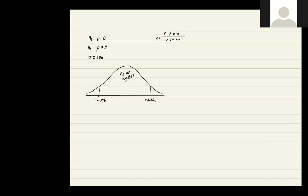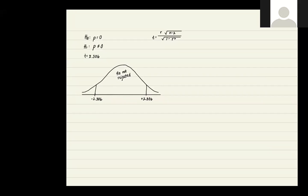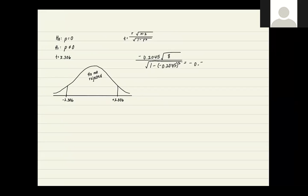So now if we go over here, we can figure out whether or not to reject or fail to reject our null hypothesis. So our R value we already calculated is negative 0.2045. In the square root, it's going to be 8 divided by 1 minus negative 0.2045 squared. This is also square root. So when we plug all of these numbers in, we get a T value of negative 0.591.